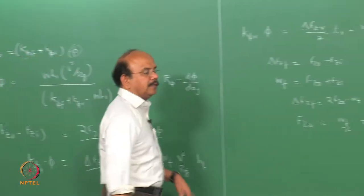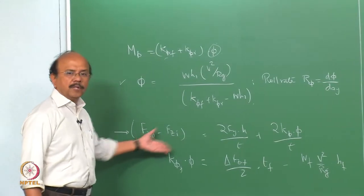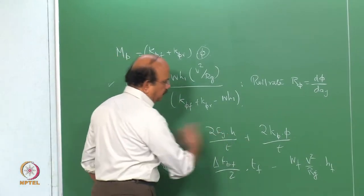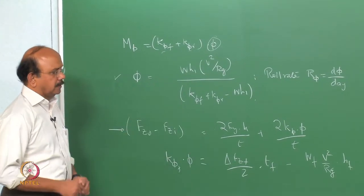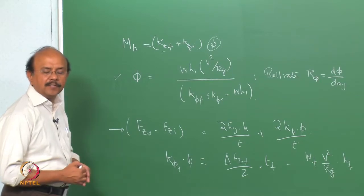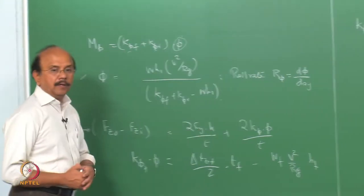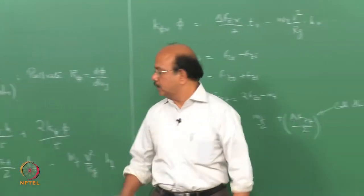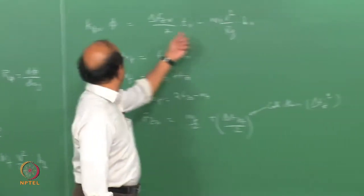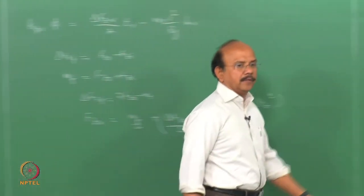That is the load transfer between the outer and the inner. I am rearranging that equation, bringing a term to the left-hand side. We know that Fy is nothing but W_f. For example, Fy_front is W_f into V squared by Rg, and that is what I am substituting here. Instead of H, I am putting H_f. So I am specializing this equation for the front as well as for the rear — this is a general expression which we derived, and we are specializing it for the front and rear.